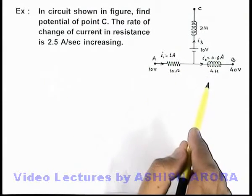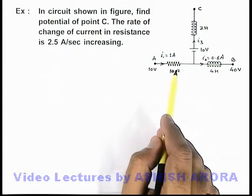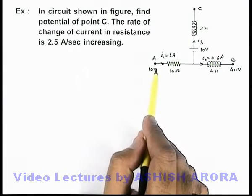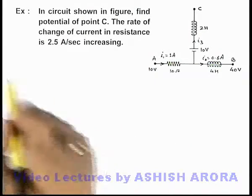There are also some parameters given in the circuit: current in resistance of 10 ohm is 1 ampere and it is increasing at 2.5 ampere per second. Potential at A is 10 volt.